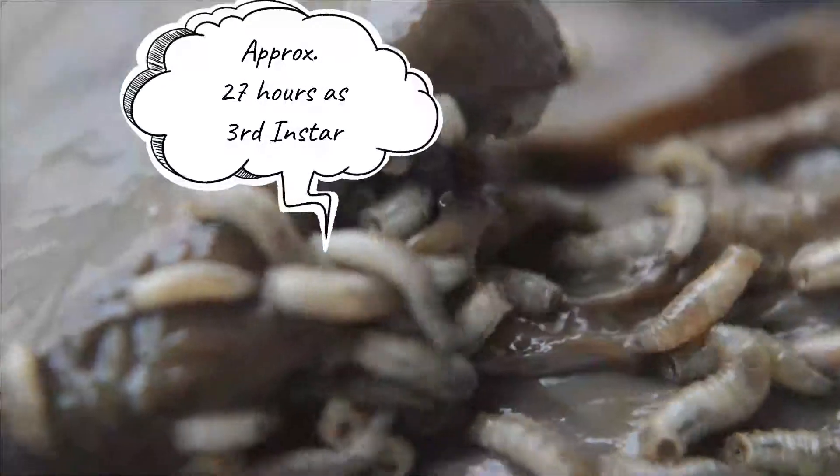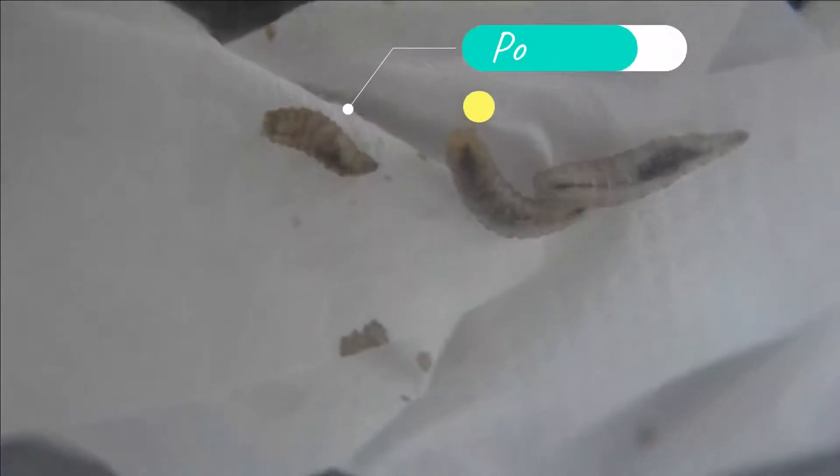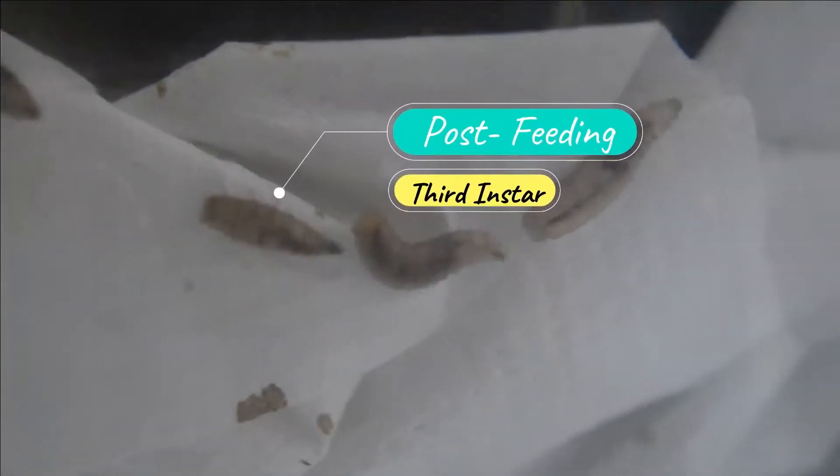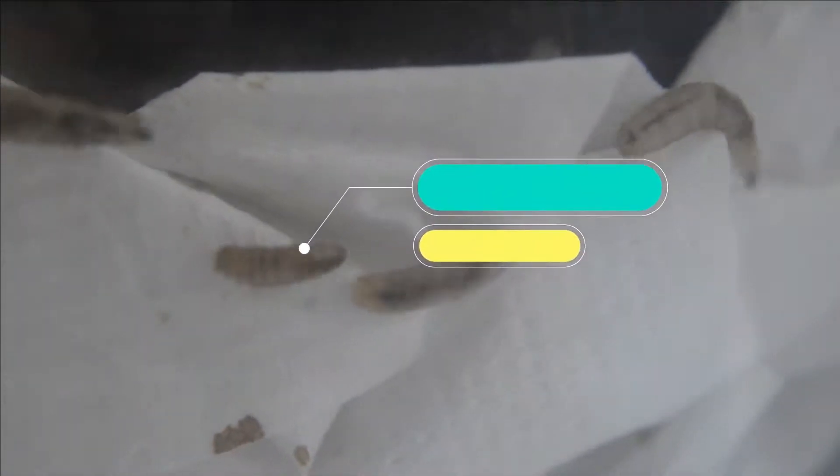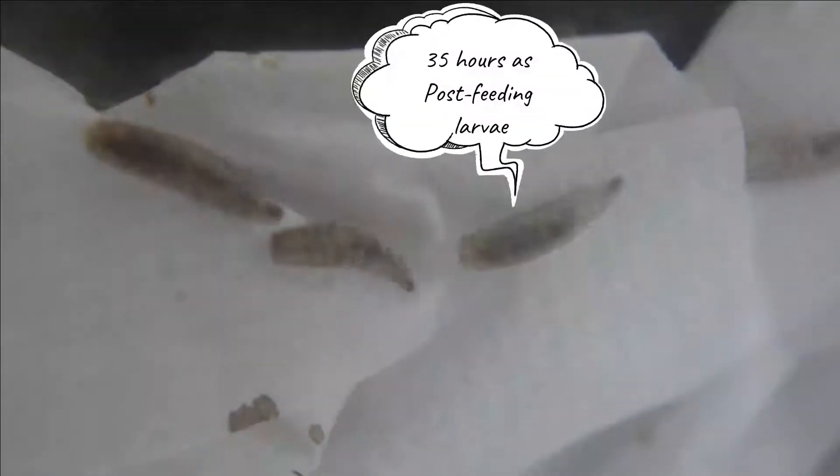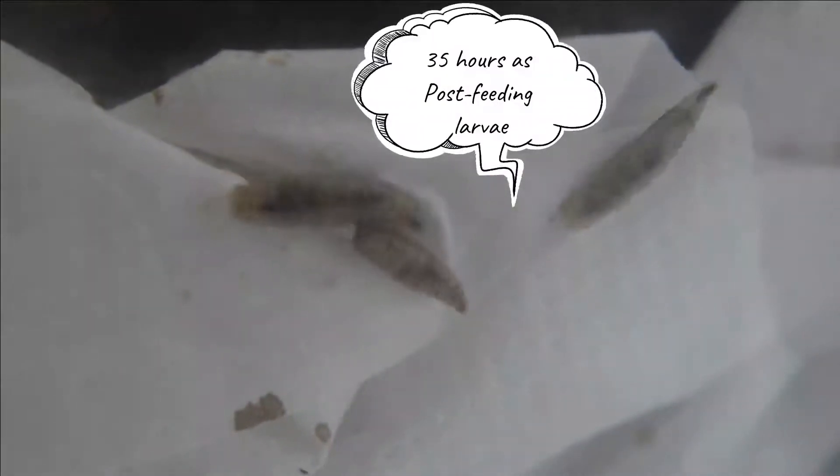Then, they will start finding the drier areas for pupation. This stage is known as the post-feeding third instar larvae. They will be in this stage for the next 35 hours before pupation.